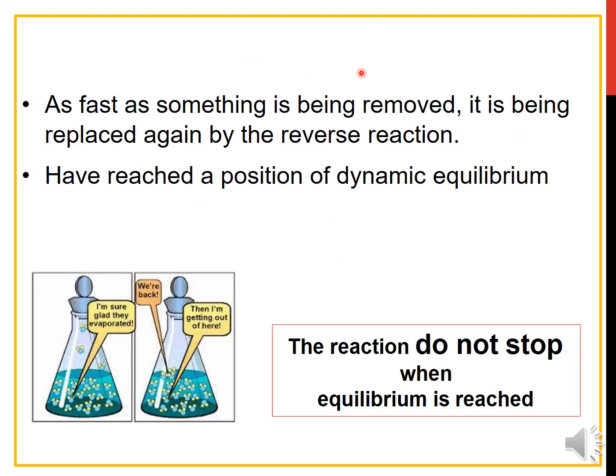As fast as something is being removed, it is being replaced again by the reverse reaction, meaning that at the start of a reversible process, the reaction proceeds toward the formation of the products. As soon as some product molecules are formed, the reverse process begins to take place and reactant molecules are formed from product molecules. At this point, they have reached a position of dynamic equilibrium. For this figure, even the water molecules are evaporated, the initial rate of water comes back by the reverse reaction. Note that the reaction does not stop even when equilibrium is achieved.